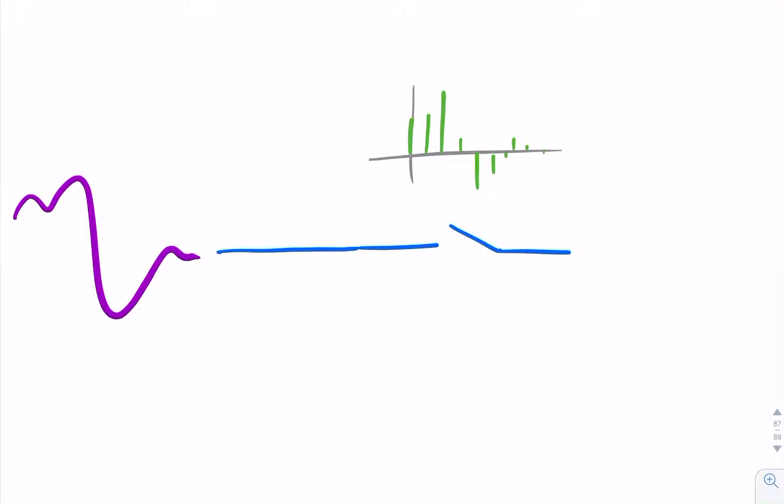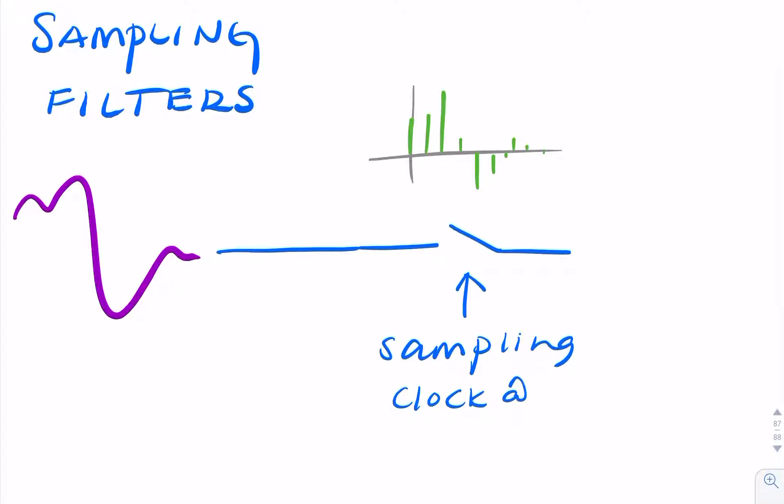I wanted to say a few words about the sampling process and sampling filters. To sample, we don't need a filter—all we need is an ideal switch. Here we'd have the sampling clock at some frequency, let's call it the sampling frequency.